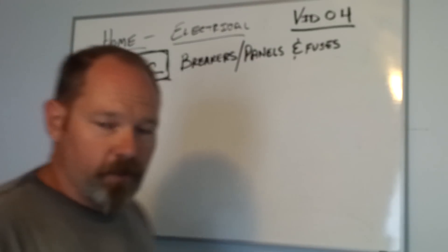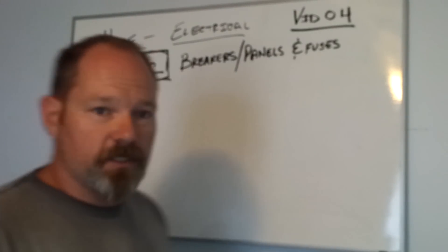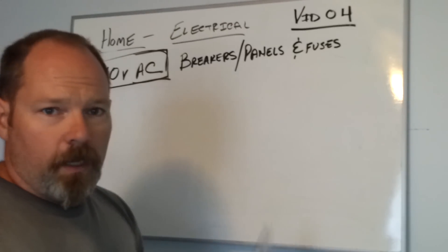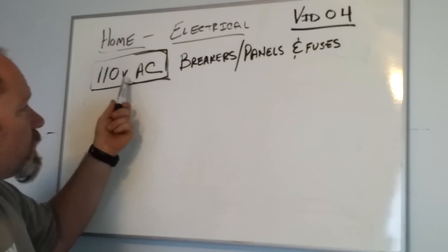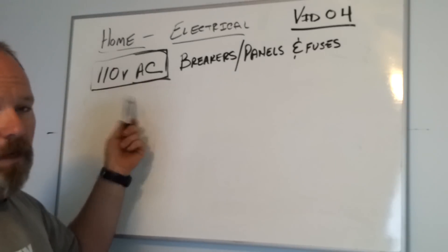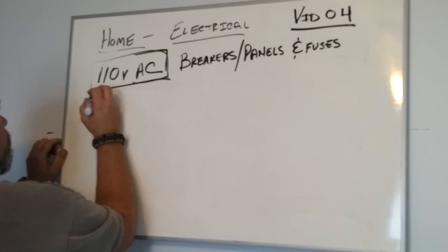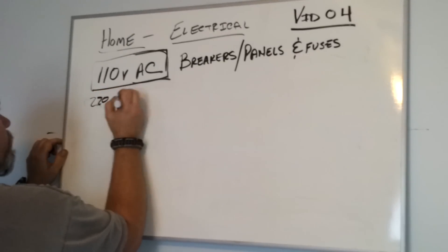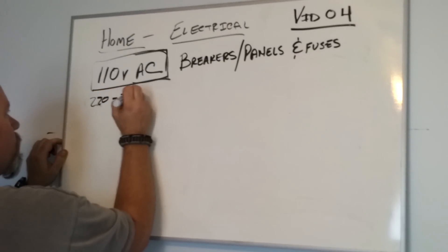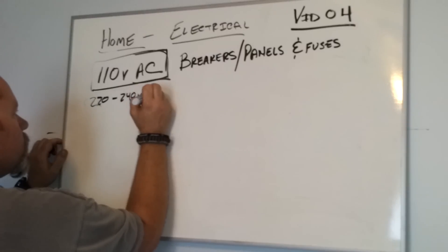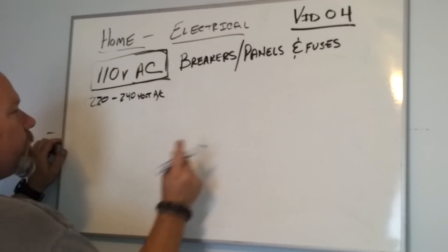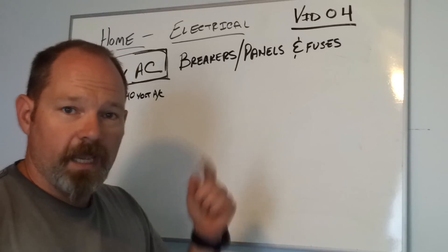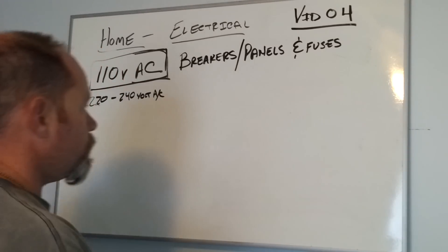Hey everybody, we're back for another video in the series on home electrical systems. This is video number four. We're still talking about 110 volt AC systems, and today we're also going to incorporate 220 — or 240 volt AC. We're going to talk about breakers, panels, and fuses.